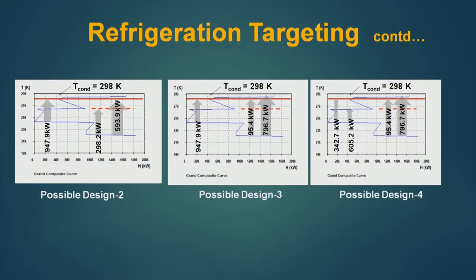In design 2, all heat available at level 1 temperature is rejected to the cooling water. However, for level 2, a part of the heat — 298.2 kW — is rejected to a process temperature level that requires heat, and the rest is rejected to the cooling water. In design 3, all heat available at level 1 is rejected to the cooling water, a part of the heat at level 2 is rejected to the cooling water, and the rest is rejected at a process temperature level which is a process sink.